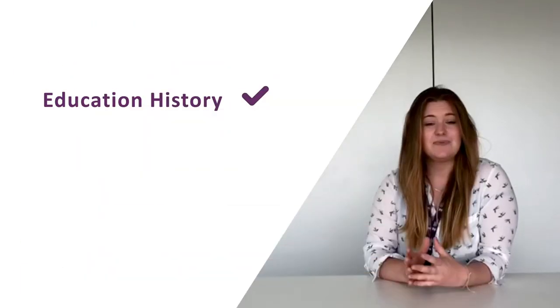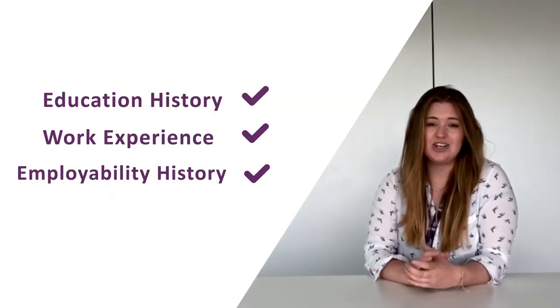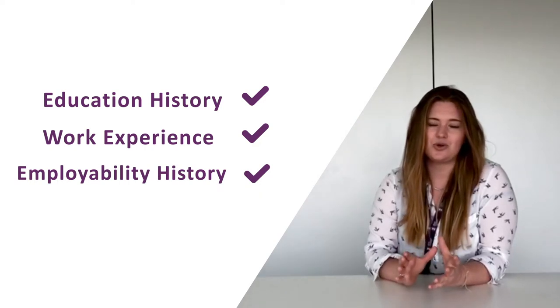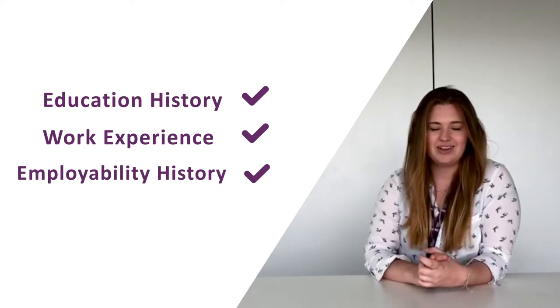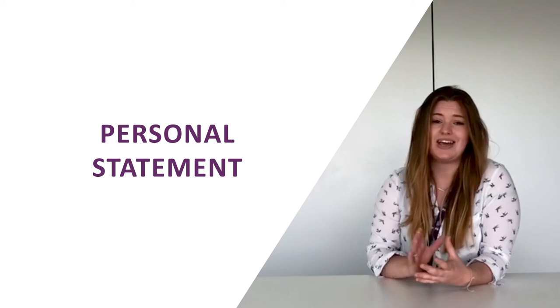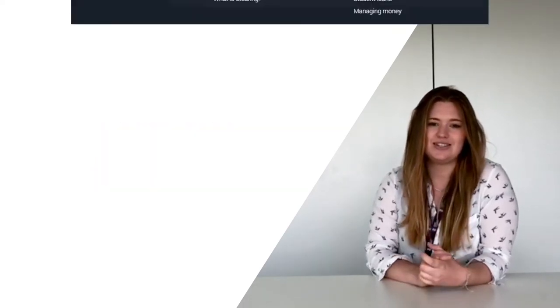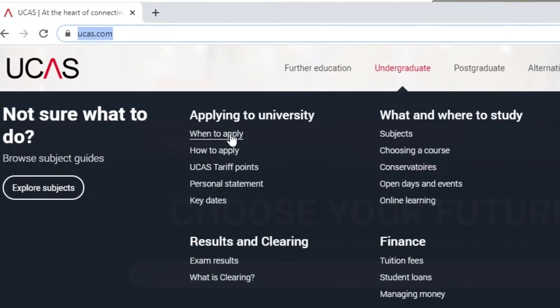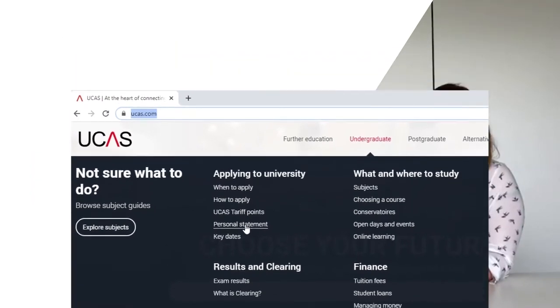After that it is about your work experience and employability history, so you can enter anything that you find is relevant to the course you are applying for. After that it is the main part — your personal statement. We find this to be the most important part of your application because that's your chance to sell yourself to the universities you're applying for. Once your application has been filled out and submitted, you can still log back in through UCAS to track the status of your application.